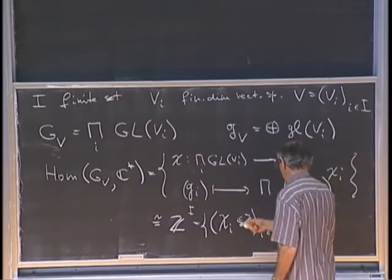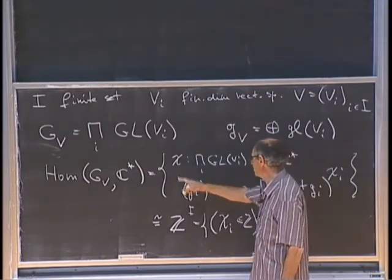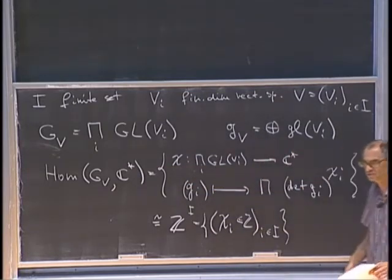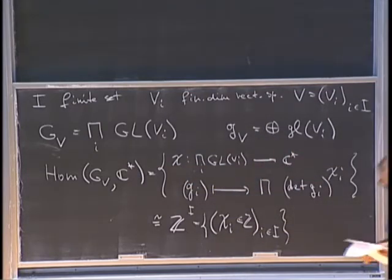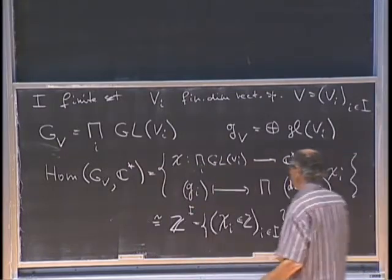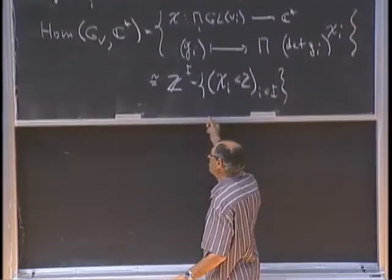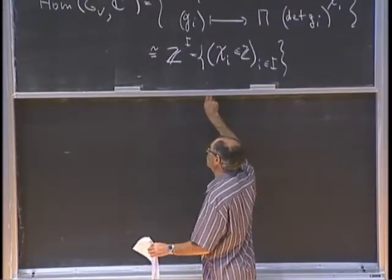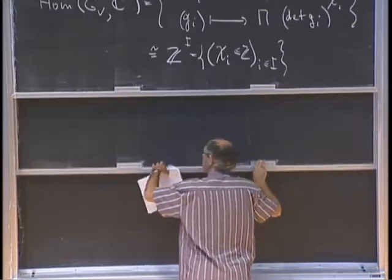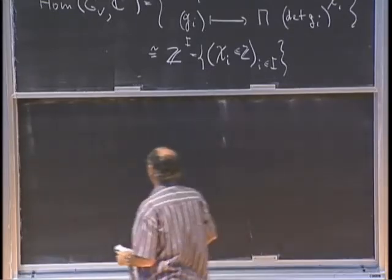I will write chi both for a character and for the corresponding I-tuple of integers. Since we want to use the moment map, we need to figure out where it goes. The moment map goes into the dual of the Lie algebra, so we look at G sub V upper star.